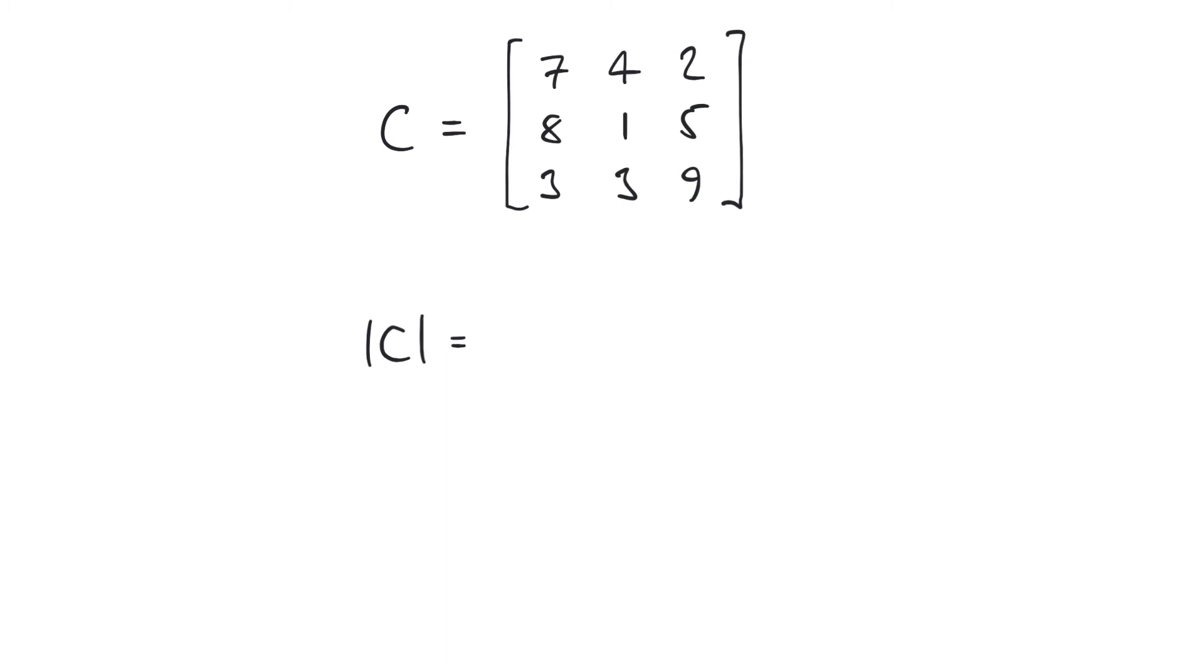So we have 7 multiplied by the 2 by 2 matrix of 1, 5, 3, and 9, minus 4 multiplied by the determinant of the square matrix 8, 5, 3, and 9. And then, finally, 2 multiplied by the determinant of the square matrix 8, 1, 3, and 3.